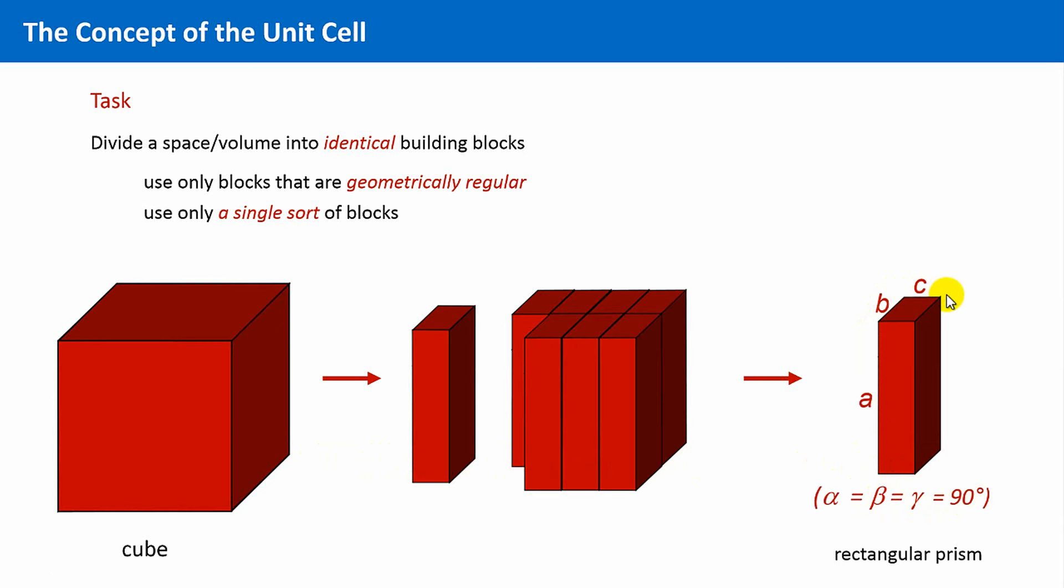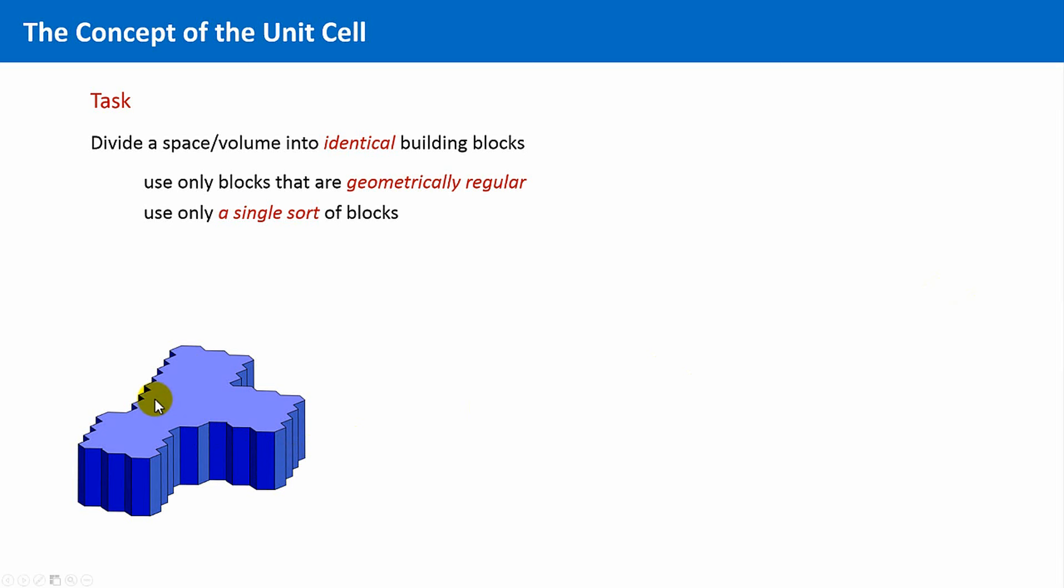Okay, let us change the initial body, the starting volume, that we want to divide into identical subunits. Look at this piece. From what subunits could this shape be built? Think about it for a few seconds.